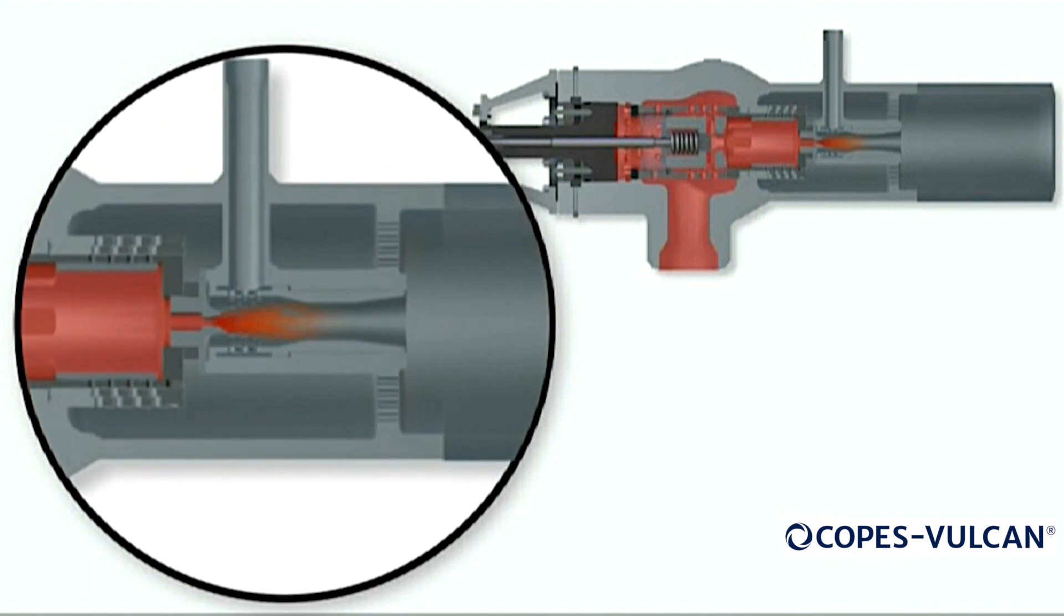Now with the pilot plug open, high pressure inlet steam has flooded the underside of the main plug, and the steam atomizing unit is now operating in preparation to receive the incoming cooling water from the water control valve.